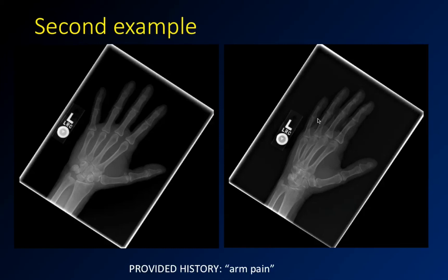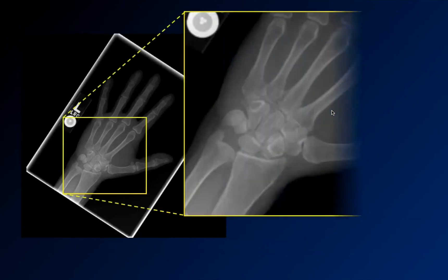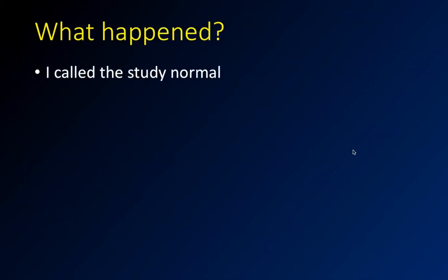Here's another example from residency — one of my first calls. I get a hand radiograph with the history 'arm pain.' First of all, if your arm is hurting, you should not be taking a radiograph of the hand. Looking at it, I just called it normal. But if you look more closely at the base of the fifth metacarpal, there's a little triangle — a little fragment — the cortex isn't quite right. That's a fracture.